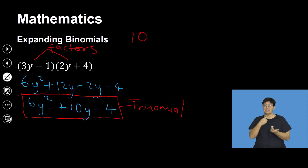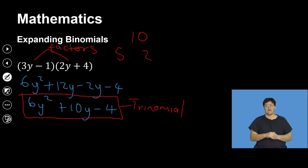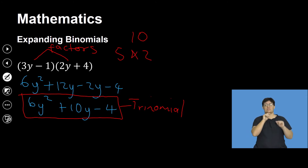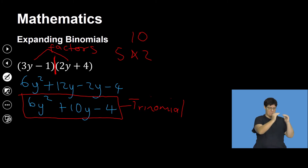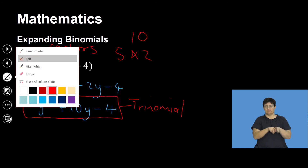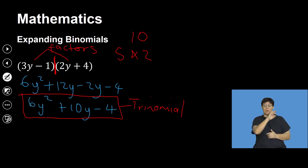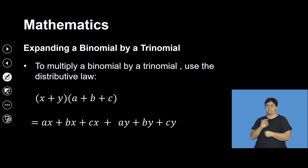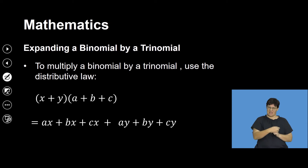The big idea is: if I have two binomials that I'm multiplying, they will most of the time give me a trinomial. At times — as you saw with the other example — it does not give you a trinomial. Now, expanding a binomial by a trinomial: to multiply two terms by three terms, you use the distributive law. Unlike binomial by binomial, where you can use FOIL, here it is solely the distributive law.